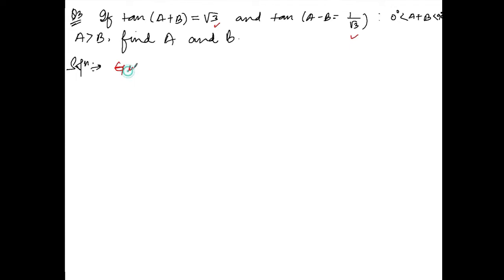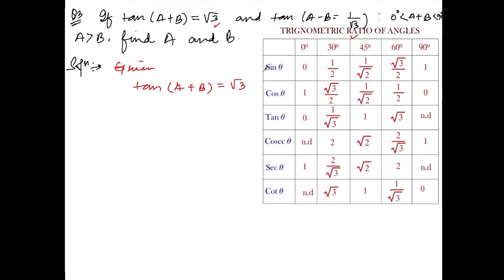What is given is tan(a+b) is equal to √3. If I bring the trig table and check, tan of 60° is equal to √3. So I can write down: tan 60° = √3. This is equation number 1.